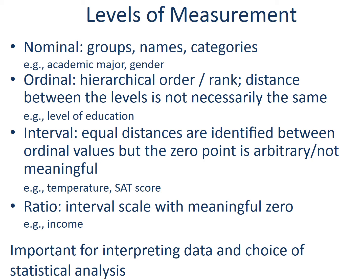In ordinal measurement, the values present a hierarchical order where rank exists but the distance between levels is not the same. An example of ordinal measurement is level of education. We can assign 'no education' and 'elementary school' values of 0 and 1 respectively and assign PhD the highest value. However, we cannot assume that the difference between no education and elementary school is the same as the gap between a master's degree and a PhD. Interval and ratio measurements are often called continuous variables.